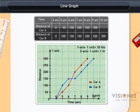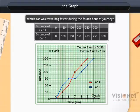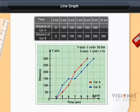Now, let's find out which car was traveling faster during the fourth hour of the journey. Speed of car A during fourth hour is equal to distance traveled in fourth hour divided by time taken, which equals 250 km minus 200 km divided by 8 minus 7 hour, which equals 50 km per hour.